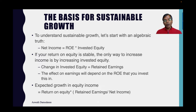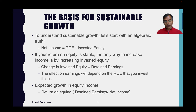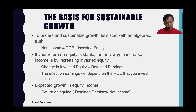So if your return on equity is stable, the only way for you to increase your net income is by increasing your book equity. How do you increase your book equity? The simplest way is to retain earnings. The effect on earnings will depend largely on what kind of return on equity you can deliver with those retained earnings. So your expected growth in equity income for a company with stable return on equity — the key word is stable return on equity — is the return on equity times the retained earnings as a percentage of net income, called the retention ratio. That is the oldest sustainable growth equation: return on equity times retention ratio.